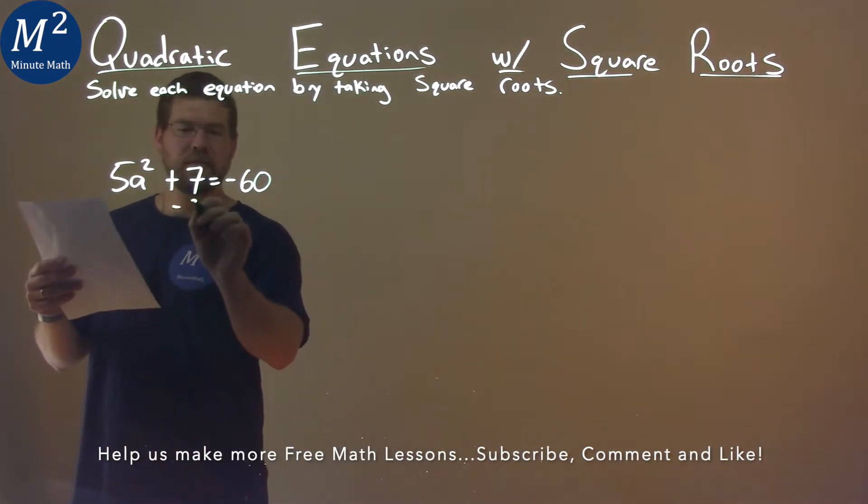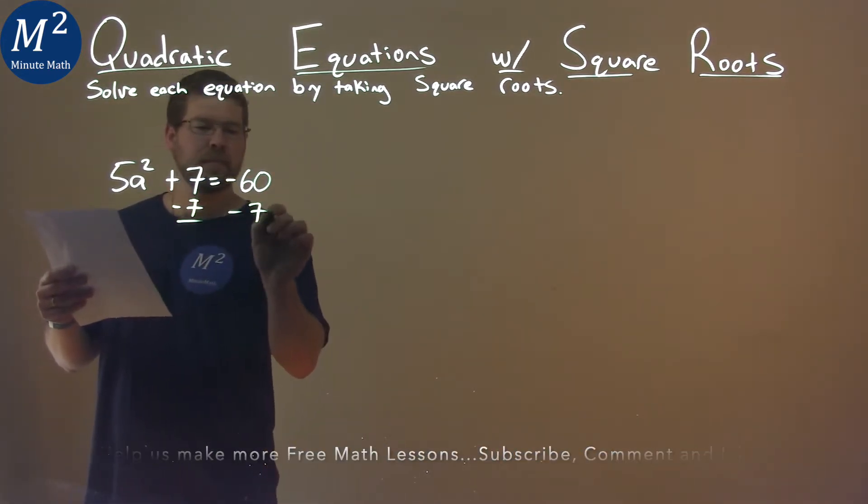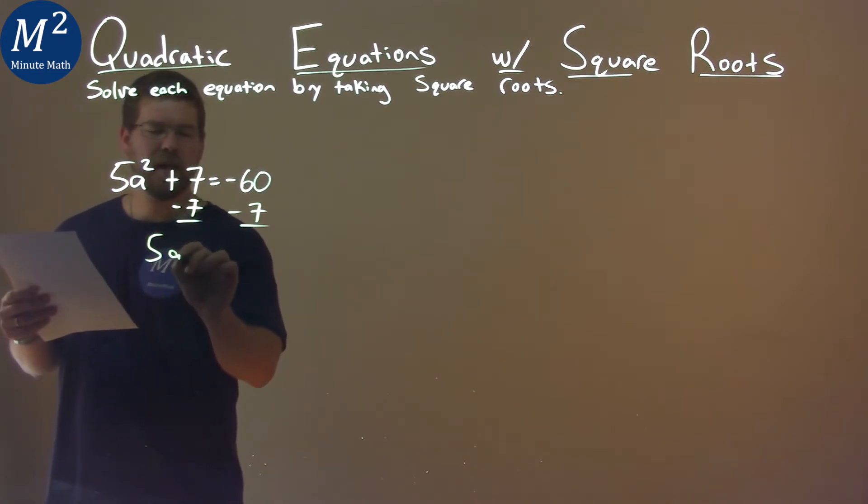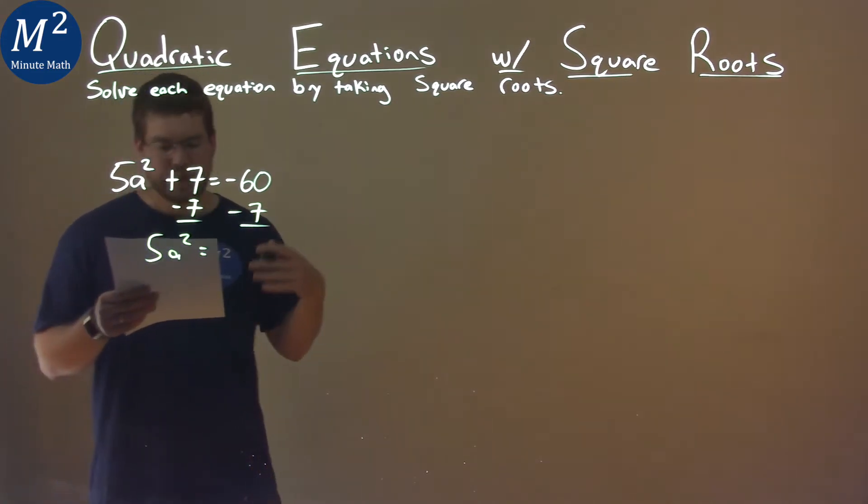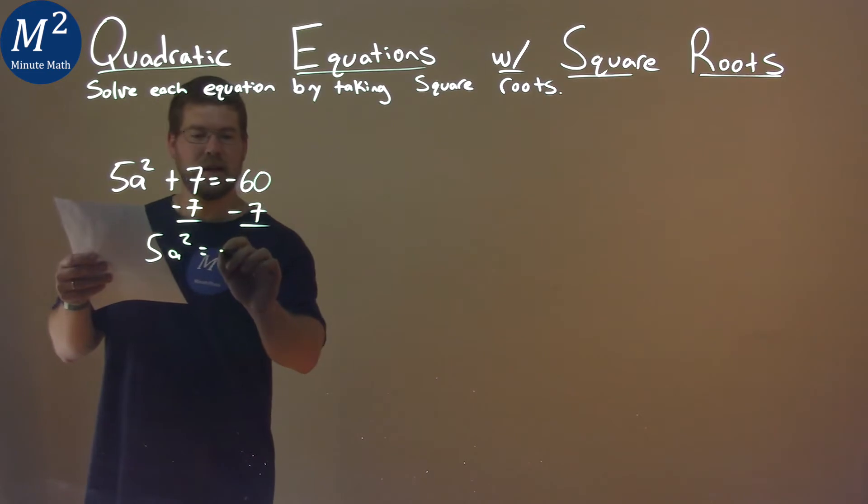First step, I'm going to subtract 7 on both sides. Try to get a by itself. So we have 5a squared is equal to, well, negative 60 minus 7 is negative 67.